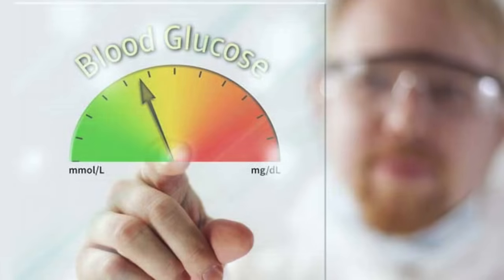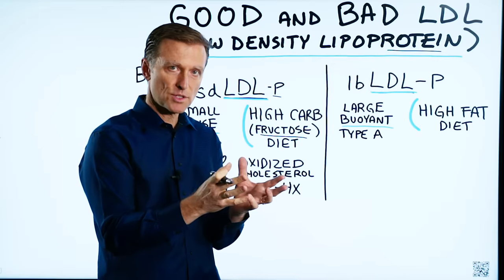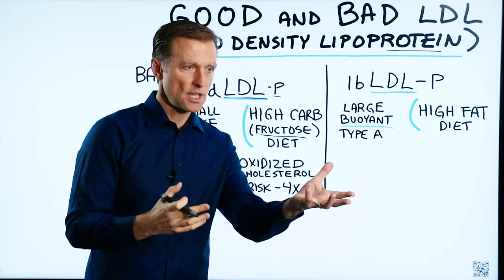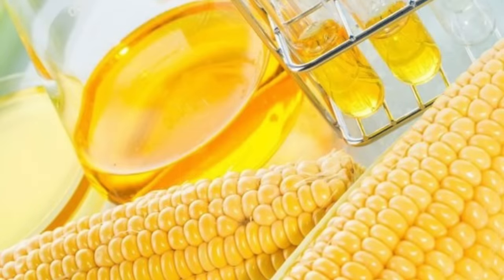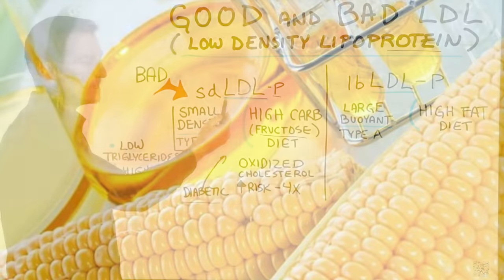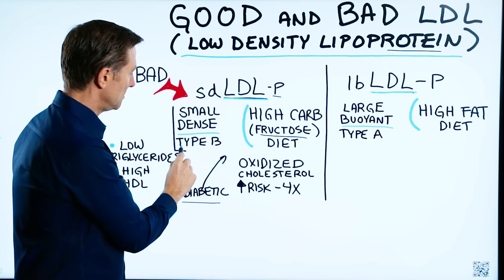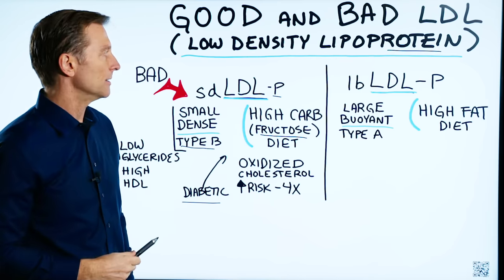Also realize that sucrose, like table sugar, is roughly half fructose and half glucose. So a lot of sugars contain fructose. This type of LDL is called Type B.